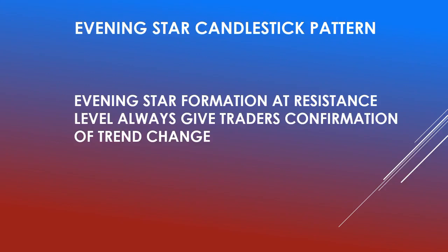The evening star formation at a resistance level always gives traders confirmation of a trend change. When you have a resistance level on your chart and the evening star pattern forms at that resistance level, you have confirmation of the bullish trend changing to a bearish trend. The formation of the evening star at resistance will confirm that the trend will definitely change to bearish.